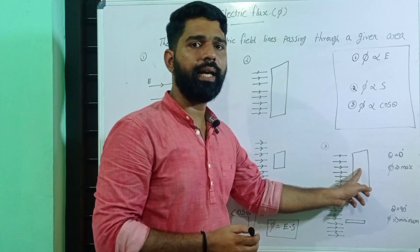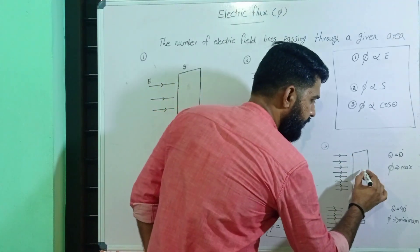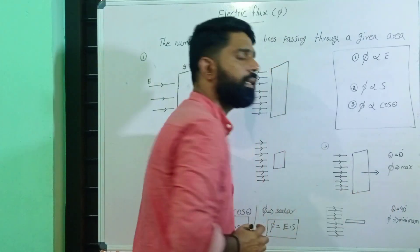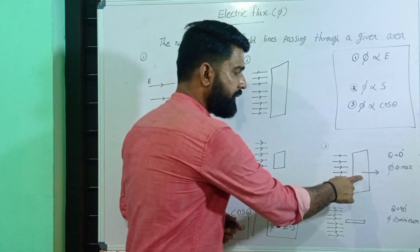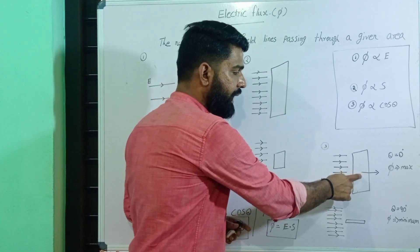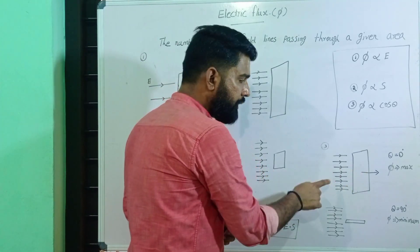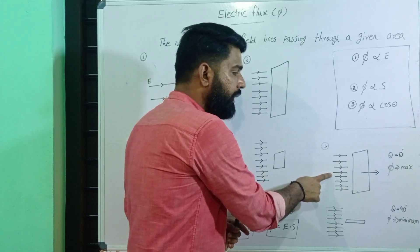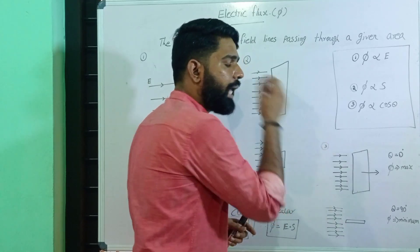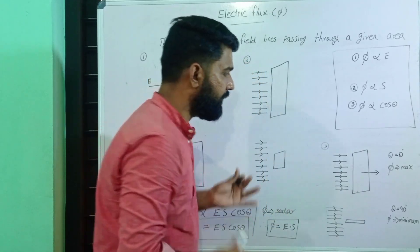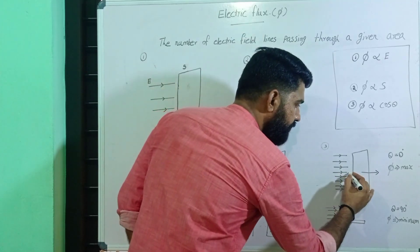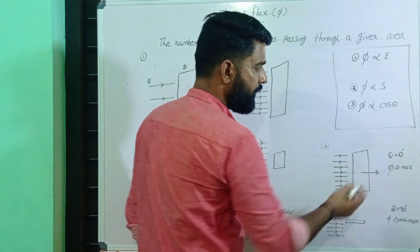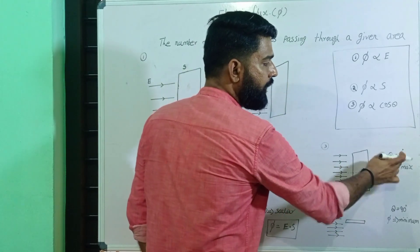This surface area vector is the direction perpendicular to the plane. That means this direction of the plane is the area vector. In the first case, the area vector is parallel to the field lines — the direction of the field line is the same as the direction of the area vector. So the angle theta is equal to 0 degrees.